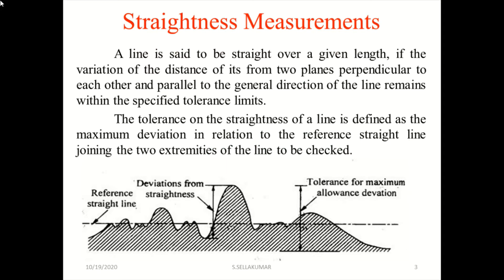Now we are going to see the straightness measurement. A line is said to be straight over a given length if the variation of the distance of its from two planes perpendicular to each other and parallel to the general direction of the line remains within the specified tolerance limits.